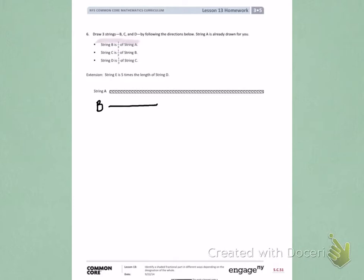String C is one-half of string B. So be careful on this. Don't look at string A. Look at string B. And we want to draw a length that is about half of B. So about half. That's a little bit too much. Try it again and make it stop right in the middle to show one-half.